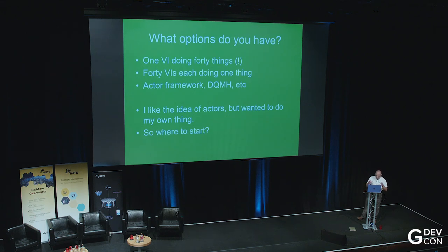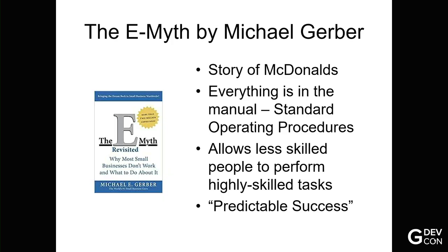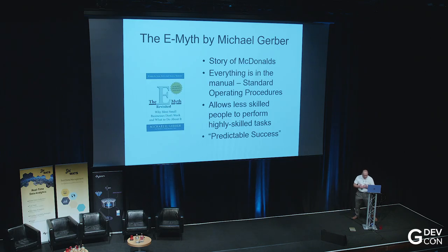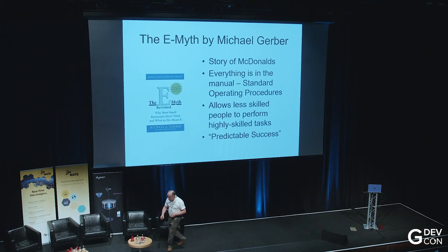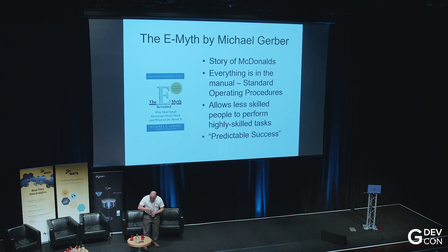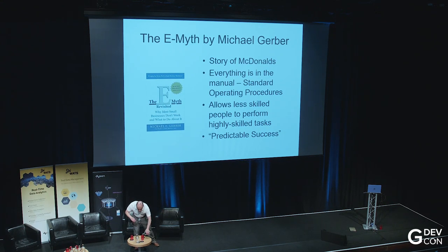So, how would you go about doing that? What options do you have? Well, you could have one VI doing 40 things, and I'm sure we've all seen code that's tried to do that. It's probably not the right way to go. I think there'd be dragons. You could have 40 VIs each doing one thing, but then you've got this task of trying to create 40 VIs, which is clearly a lot of work in itself. You could look towards something like the actor framework or DQMH or other architectures that are out there. I've always liked the idea of actors, but I've always preferred to do my own thing, just the way I am, I guess.